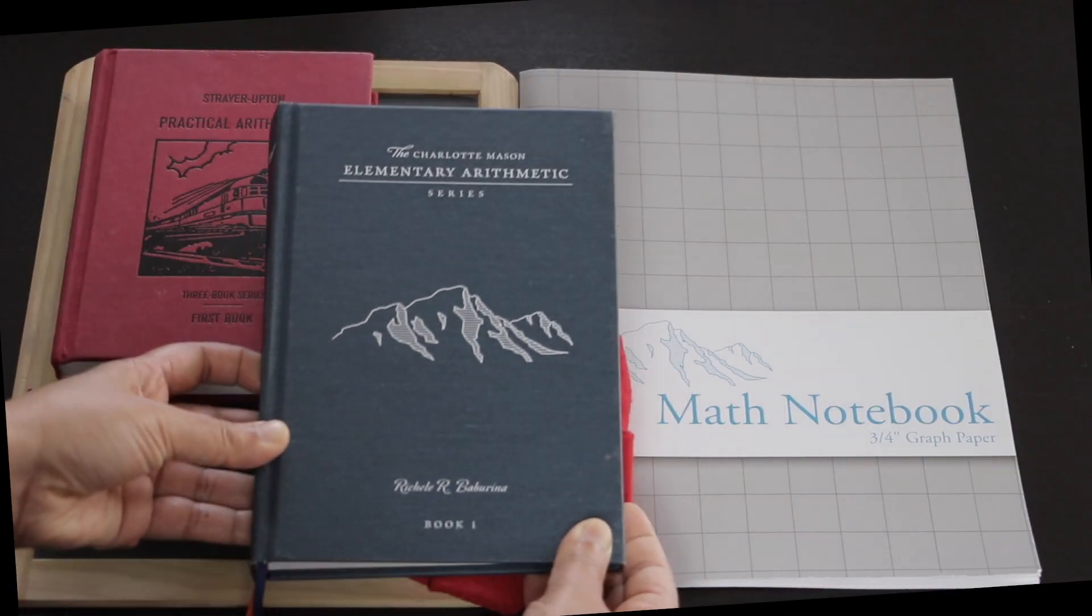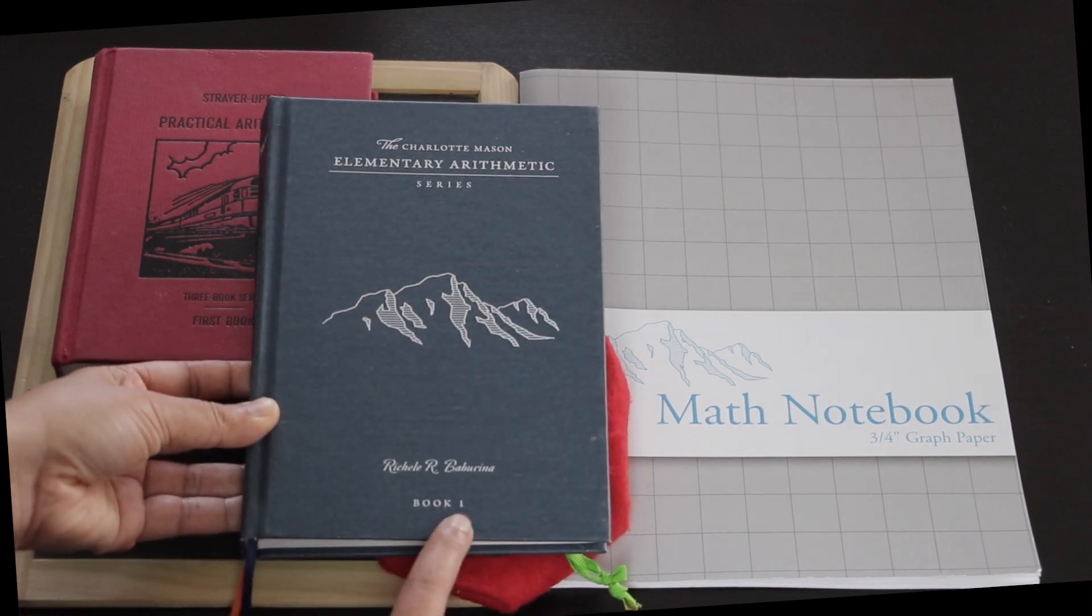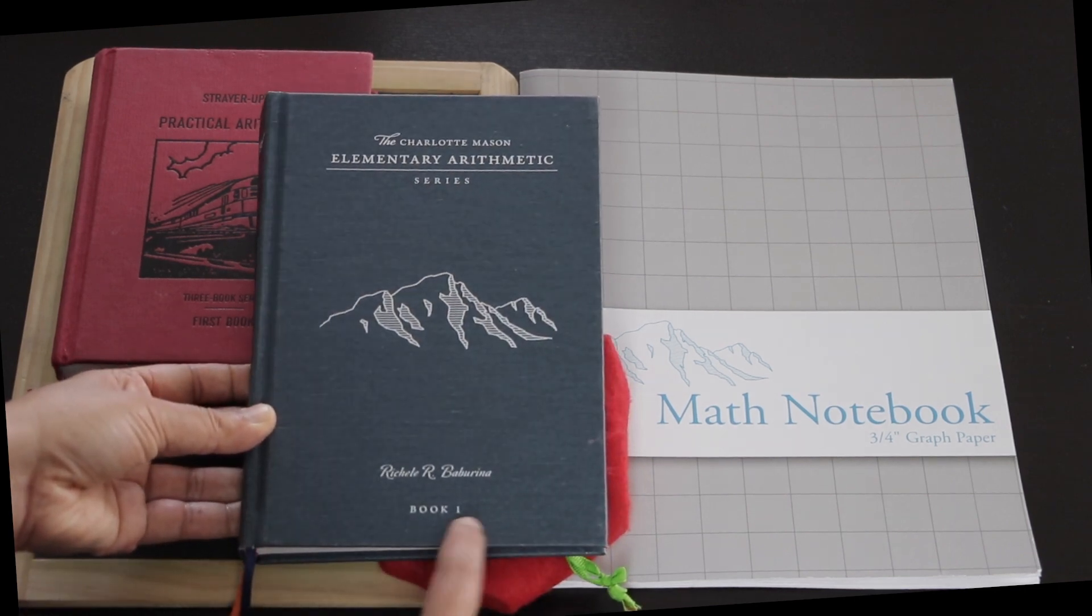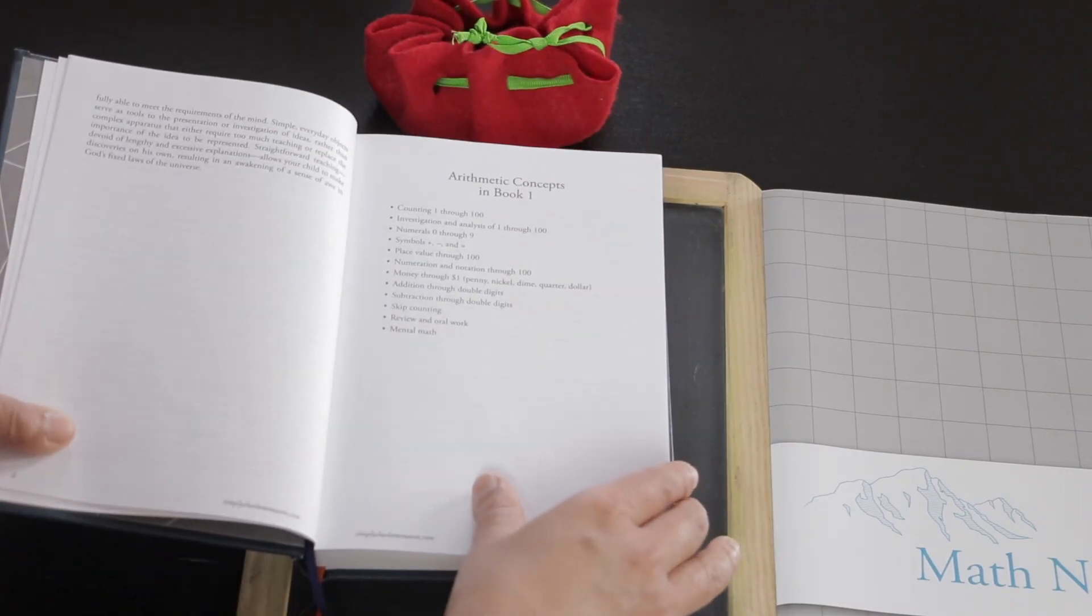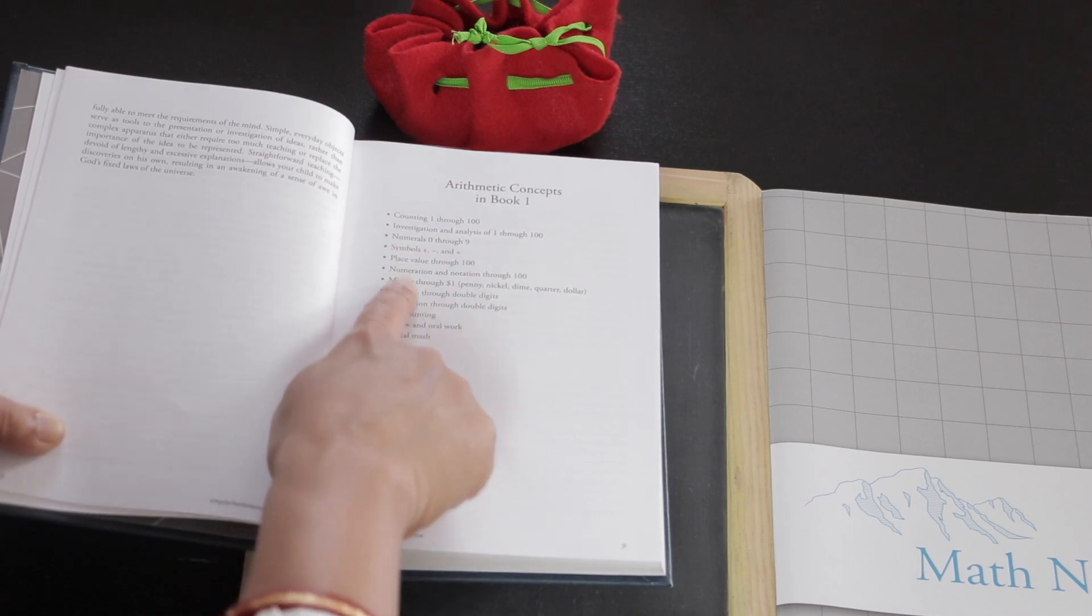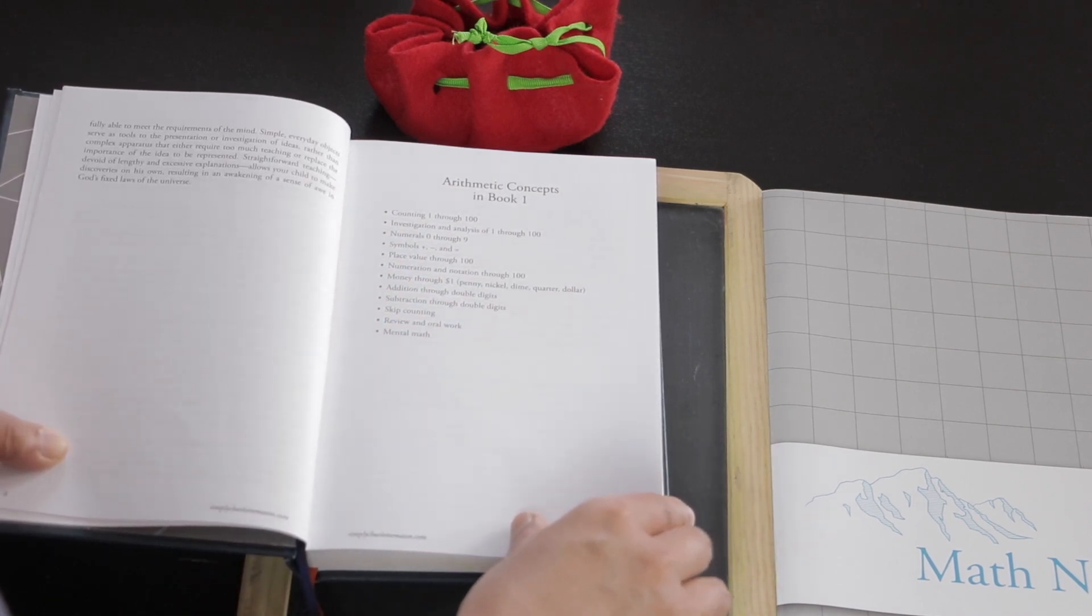For mathematics we use this book of arithmetic by Rochelle Baburina for our grade 1 or form 1b. Let's take a look inside it. It's a very beautiful book that I have ever come across with well laid down lessons. It starts with very basic concepts of numbers.